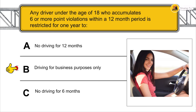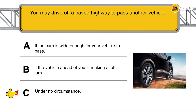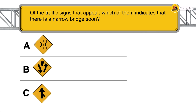You may not drive off a paved highway to pass another vehicle under any circumstances. Of the traffic signs that appear, which of them indicates that there is a narrow bridge ahead?